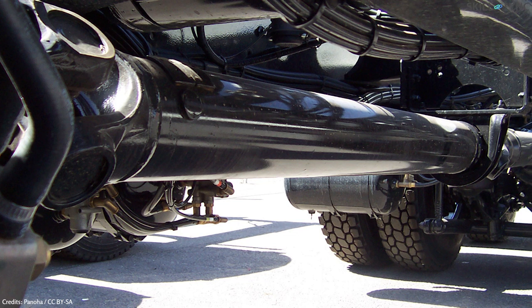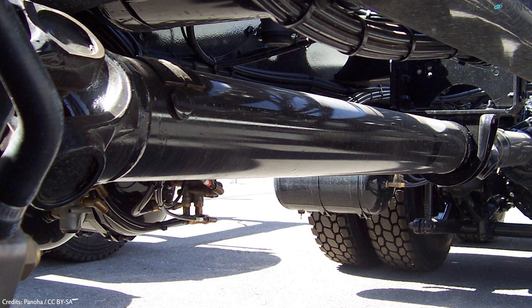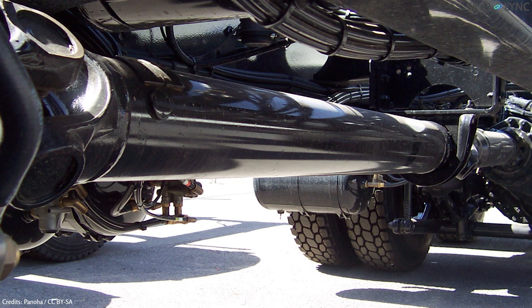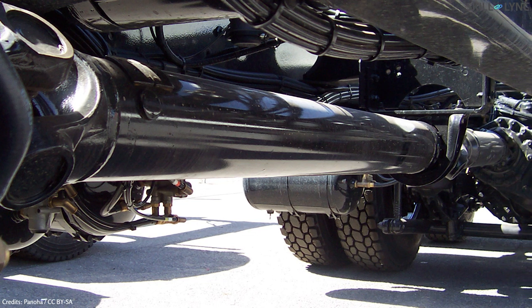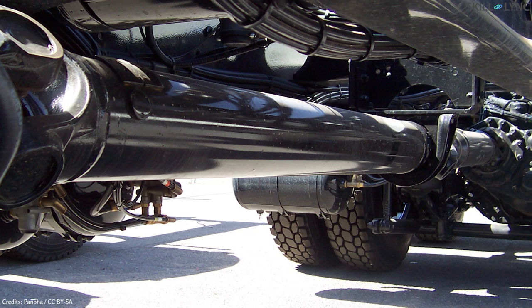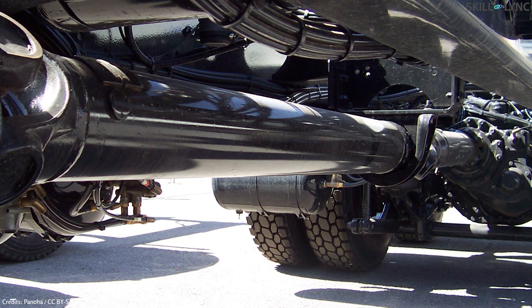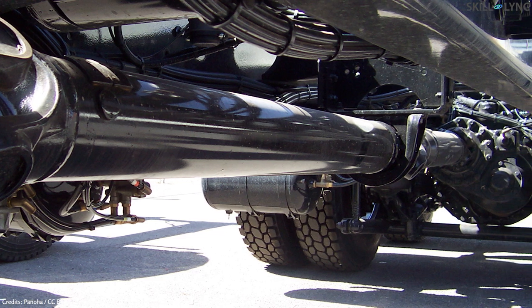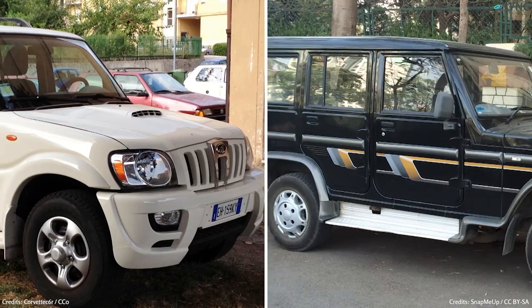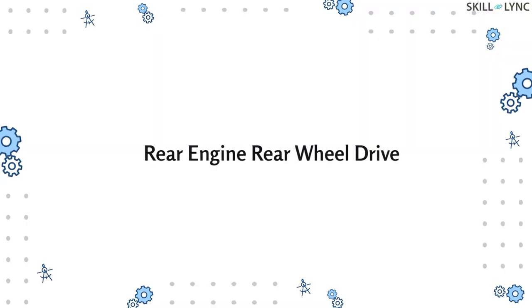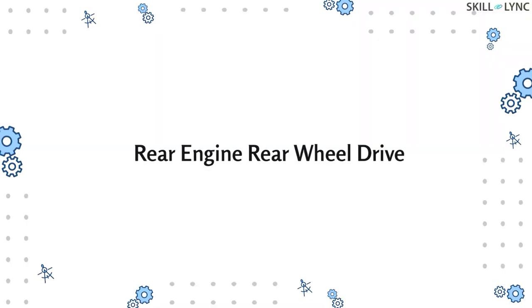But the increased distance between the engine and drive wheels requires a long propeller shaft, and a tunnel has to be provided for it in the car floor. This can be seen in the Mahindra cars.